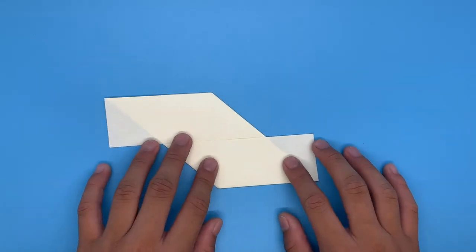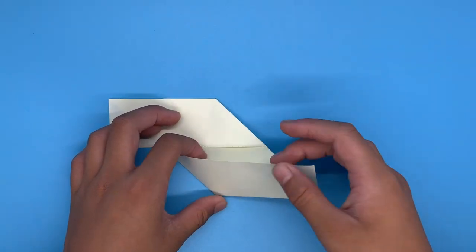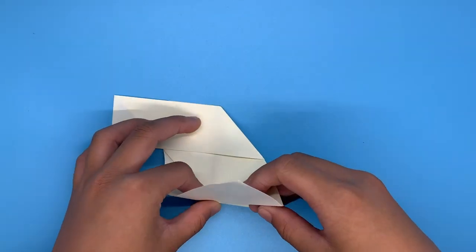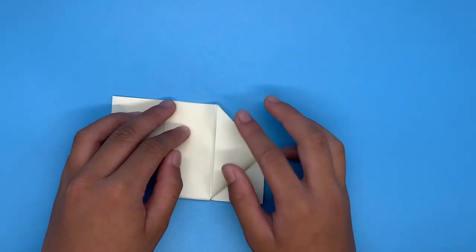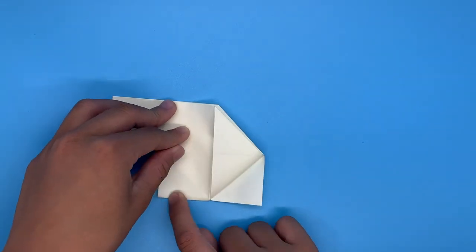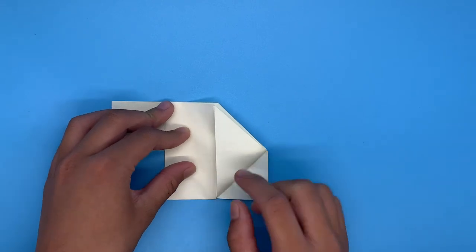So this is the part that gets a little confusing. We're going to sort of take this from the middle, we're going to just swing it around like that, and then we're going to only crease this bottom line. You can crease here but it's not going to look as pretty.